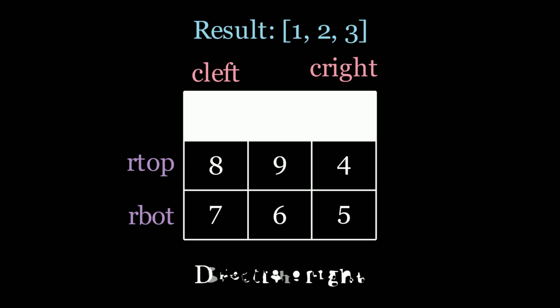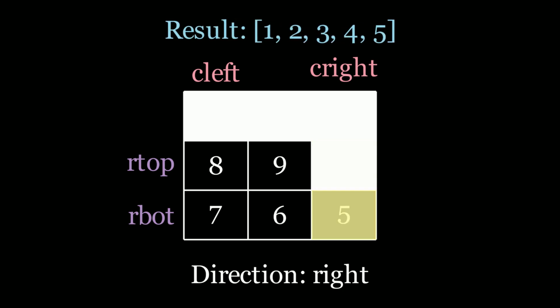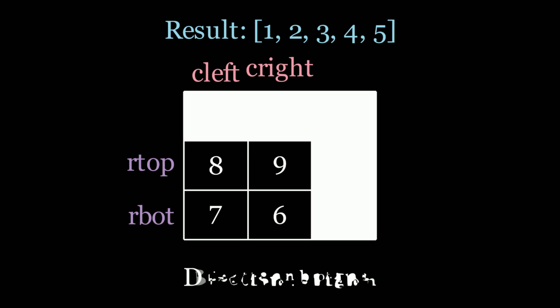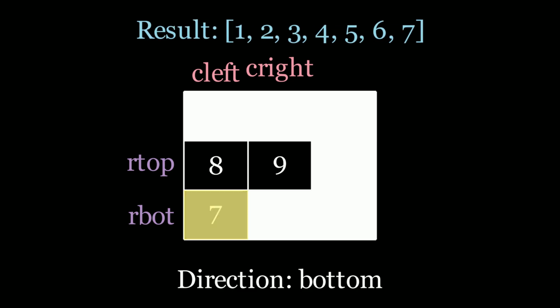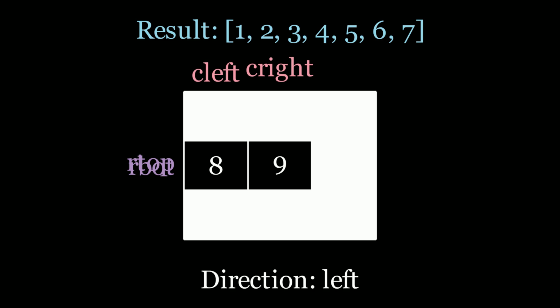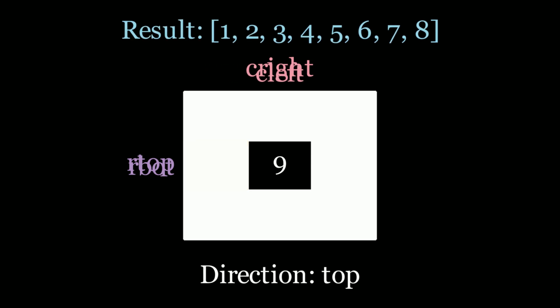Now the direction goes to right, so I scan C_right — that column — adding 4 and 5 to the result. Then I move C_right to the left by one, shrinking the perimeter. Next direction is bottom: I scan the bottom using R_bottom, going through 6, 7, then move R_bottom. Then the left direction — in this case just element 8 — and I move C_left, cycling back to the top direction.